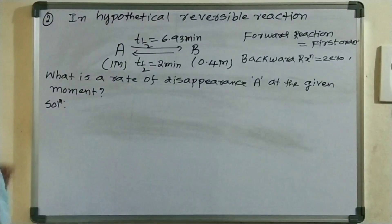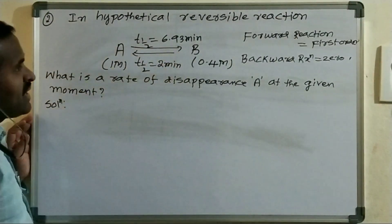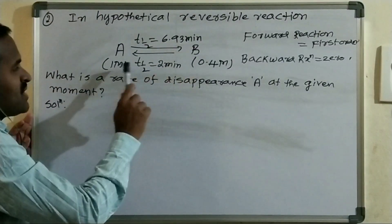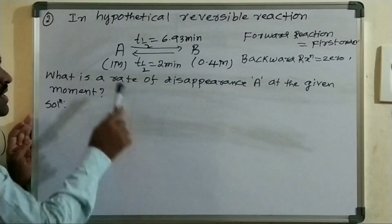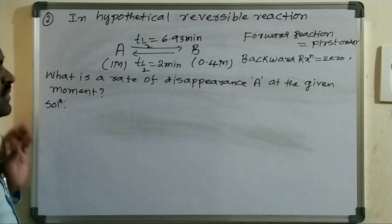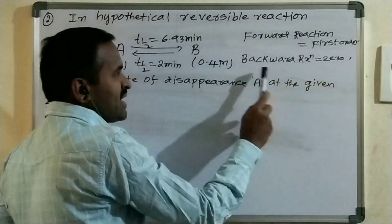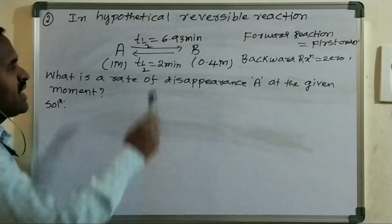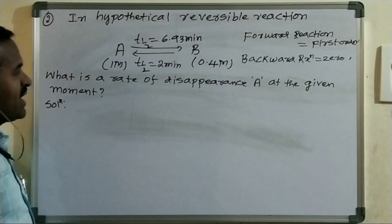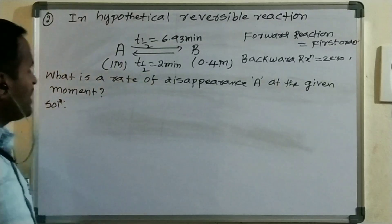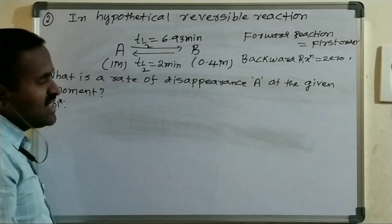The second question: in a hypothetical reversible reaction A gives rise to B, the forward reaction half-life is given as 6.93 minutes, the backward reaction half-life is 2 minutes, the initial concentration of A is 1 molar and B is 0.4 molar. The forward reaction is first order and the backward reaction is zero order. They are asking to find the rate of disappearance of A.